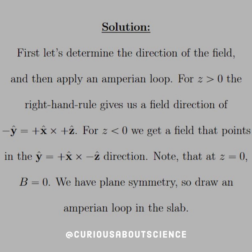We need to first determine the direction of the field, then apply an Amperian loop. For z greater than 0, the right-hand rule gives us the field direction of negative y-hat, which we can find by taking the cross product of the current j with the direction we're pointing — in this case, positive z. Similarly, for z less than 0, we get the field pointing in the positive y-hat direction: x-hat cross negative z-hat. Note that at z equals 0, the field equals 0, since everything cancels.